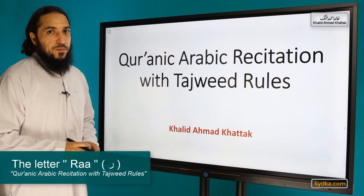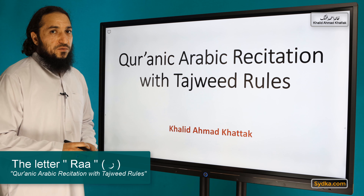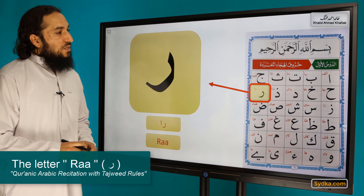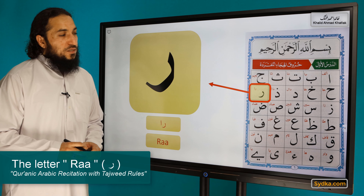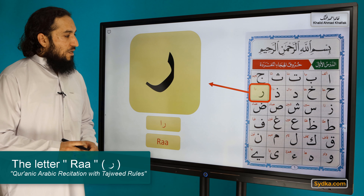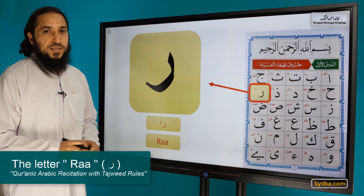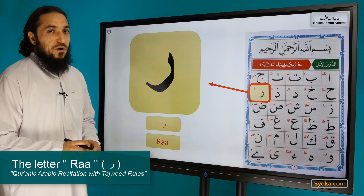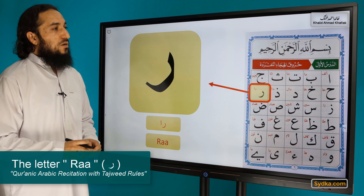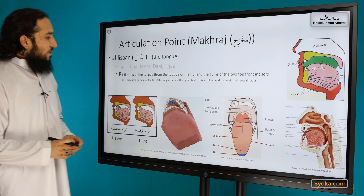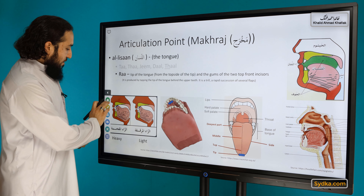Bismillahirrahmanirrahim, assalamu alaykum wa rahmatullahi wa barakatuh. Welcome back to another session of Quranic Arabic recitation with Tajweed rules. In this session we will be studying the tenth letter of the Arabic alphabet, called Ra. The sound is R — Ra, the sound is R.